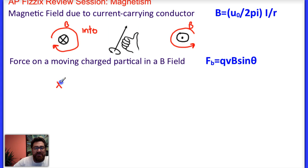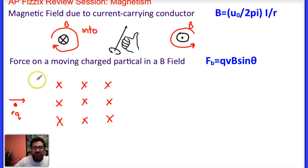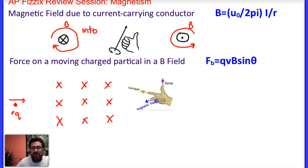Let me sketch a magnetic field going into the paper — X denotes into the paper in that Z-axis. I'll draw a positive charge with a velocity going in the rightward direction. As soon as it enters this region of the magnetic field, a force acts on it that's perpendicular to the direction of velocity. We'll use another right-hand rule that we'll be using quite a bit, or variants of it.